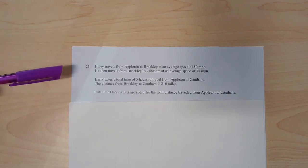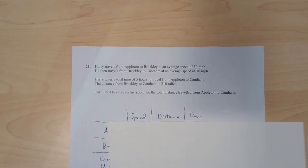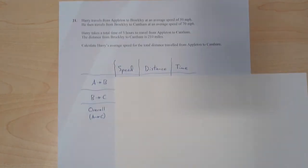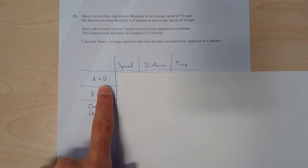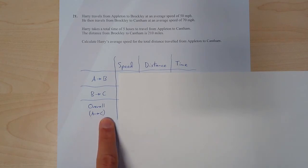Now the best way to set up these sort of questions where you've got two parts of a journey, different speeds, is to do a table. So I've set up a table like this. So I've got speed, distance and time. I've got Appleton to Broccoli and Broccoli to Cantham. And then I've got the overall journey from Appleton to Cantham because that's what I'm interested in. And I want to work out the speed.